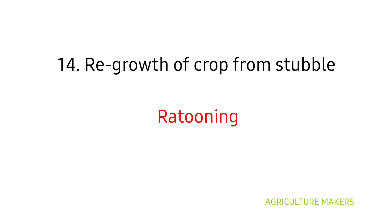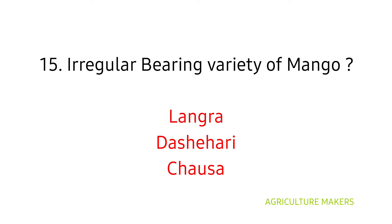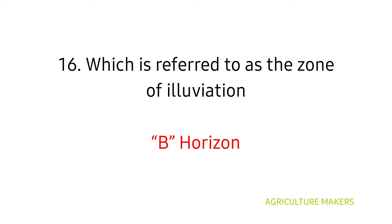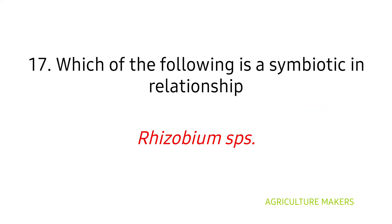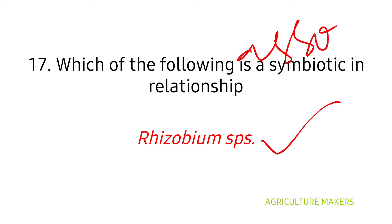Regrowth of a crop from stubble is known as ratooning. For irregular bearing varieties of mango, Langra, Dashehari, and Chausa are irregular bearing varieties. Regarding soil horizons, the zone of illuviation is the B horizon; if asked about eluviation it is the A horizon. For symbiotic nitrogen fixation, it is Rhizobium. If asked about associative symbiotic, the answer is Azospirillum. If free-living is asked, it is Azotobacter.